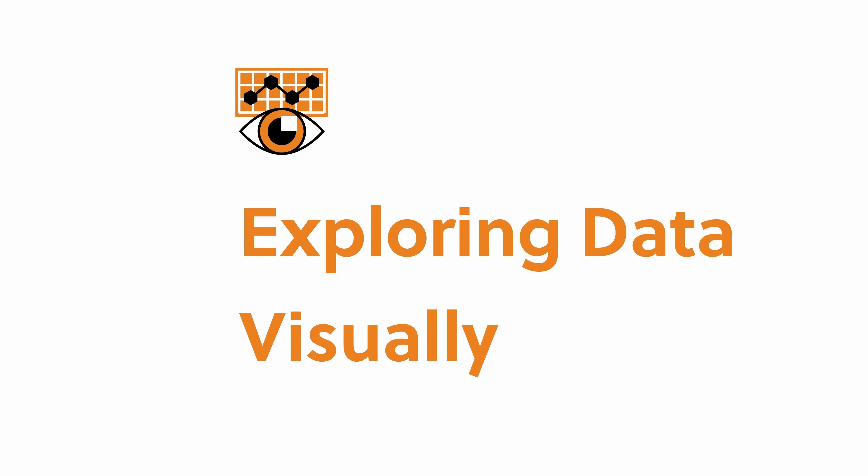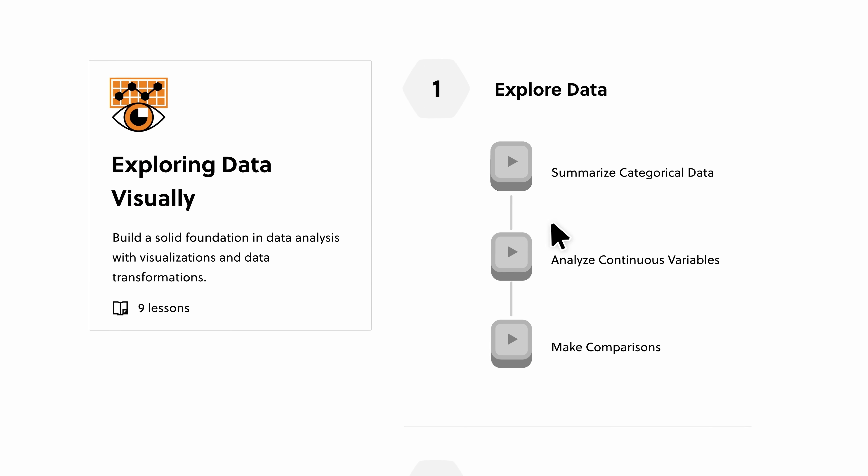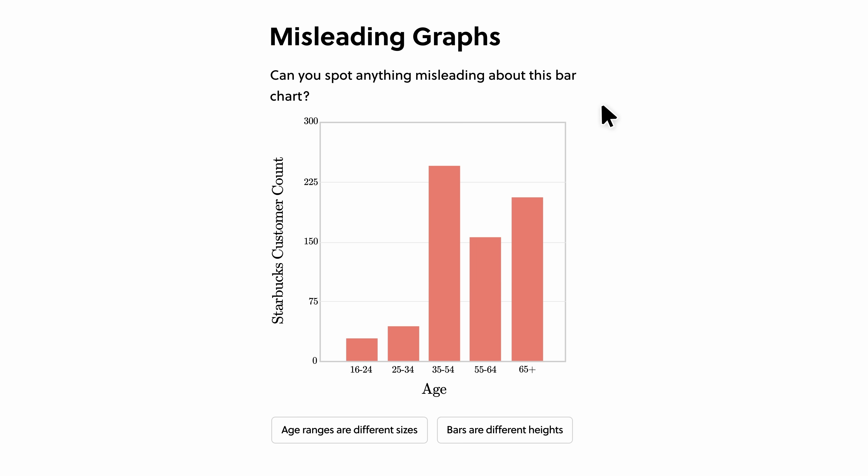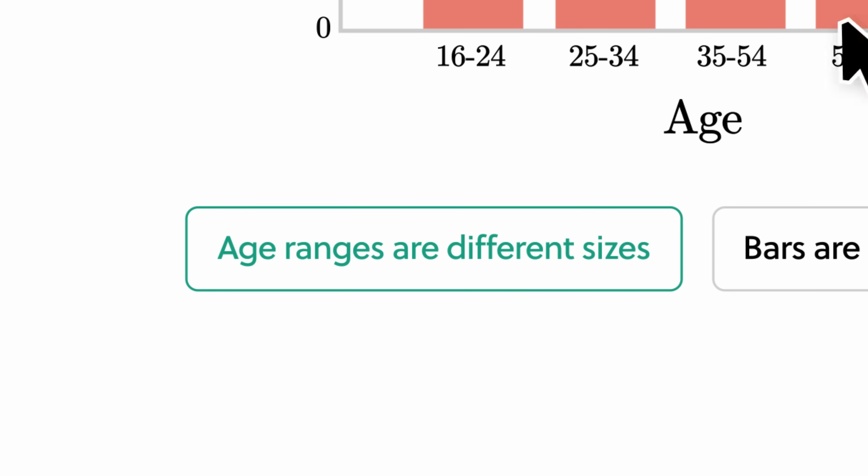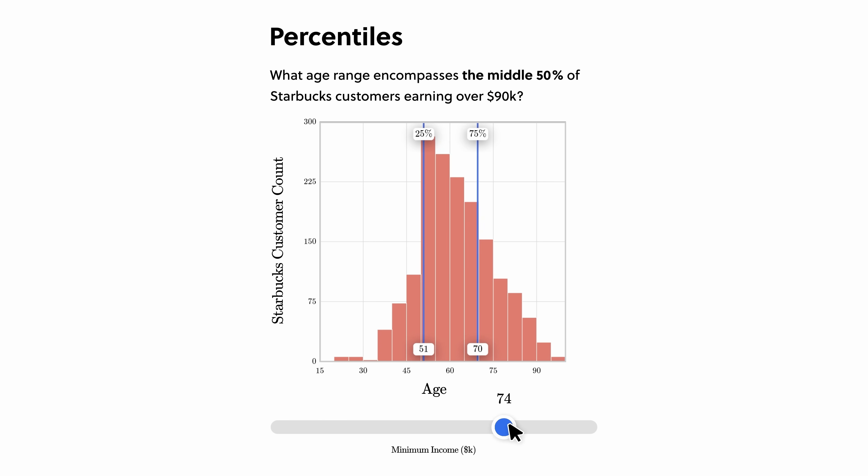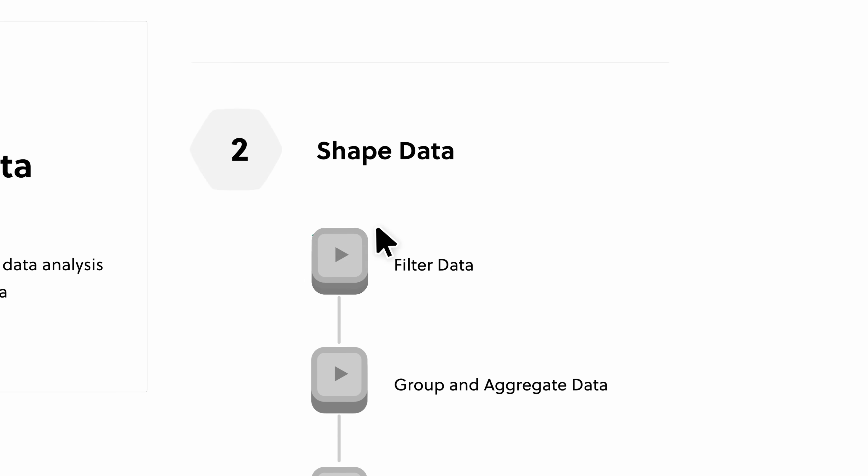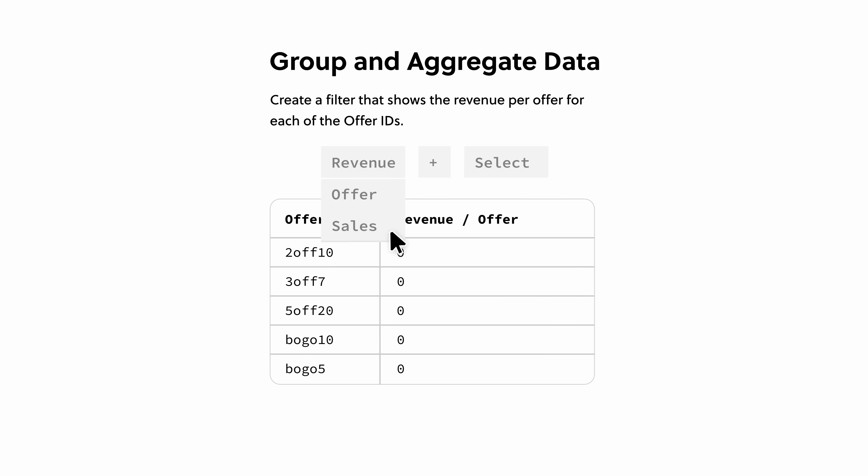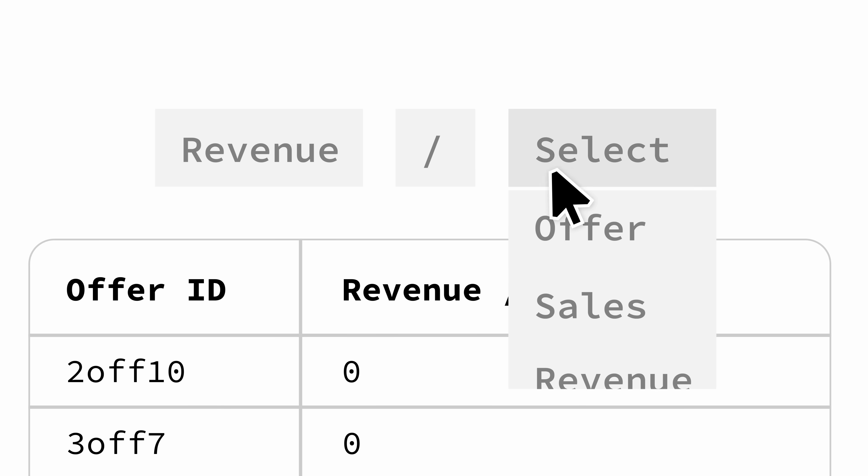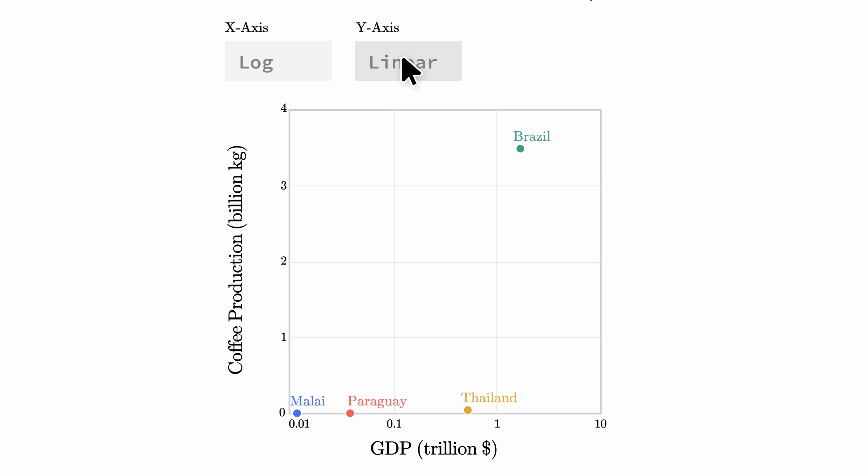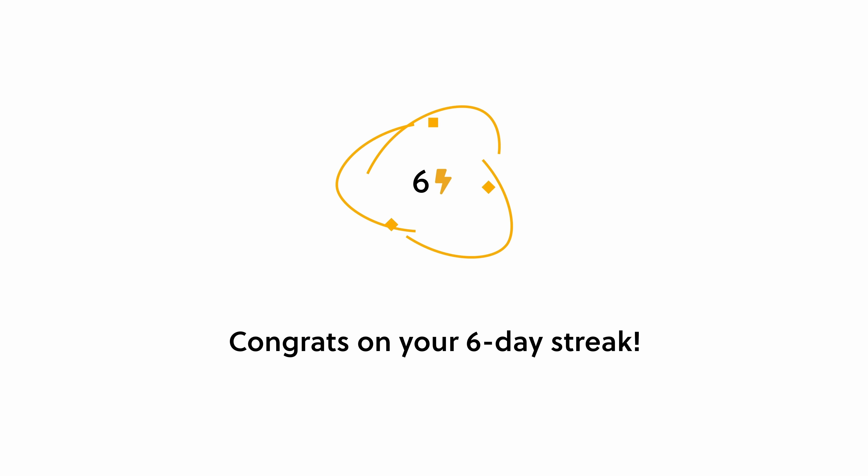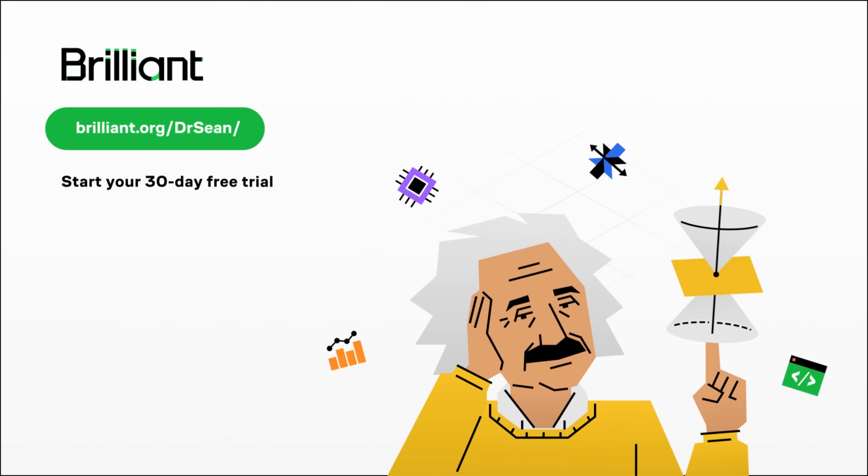In Brilliant's new data analysis courses, you'll learn how to visualize data with graphs, and how some graphs can be misleading. You'll use probabilities to make predictions and explore the power of Bayes' theorem. In their case study, you apply your new knowledge to real data from Spotify's top 100 list. When you're ready, you can continue on to courses in linear regression and creating models from multiple variables. To try everything Brilliant has to offer for free for a full 30 days, visit brilliant.org slash Dr. Sean, or click on the link in the description. You'll also get 20% off an annual premium subscription.